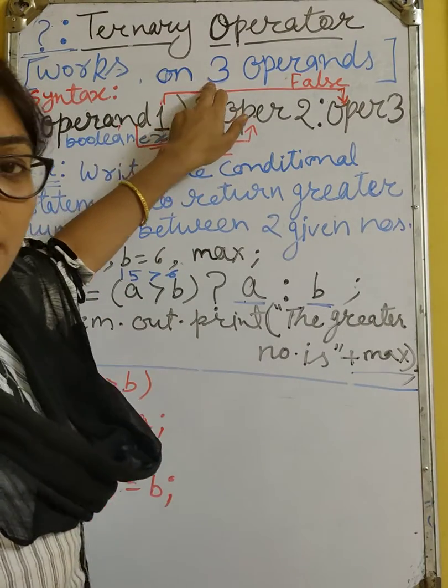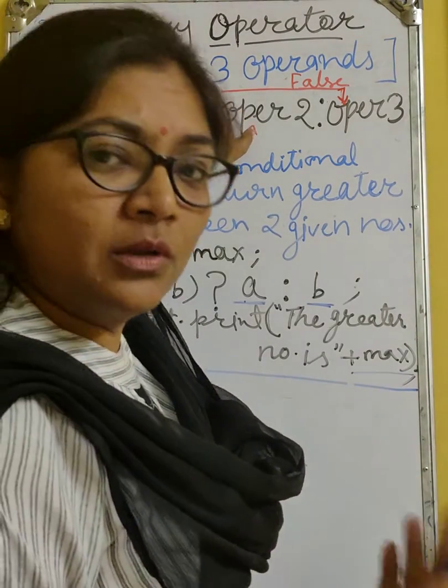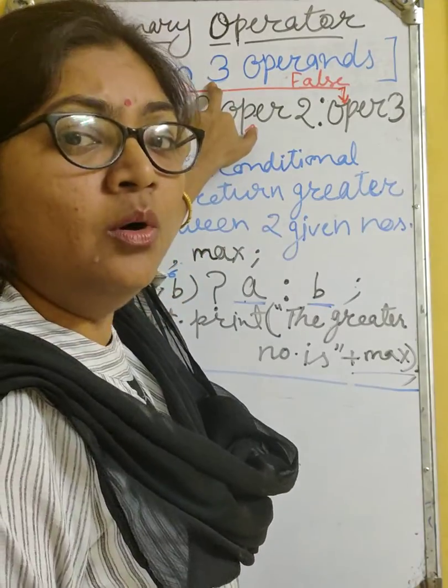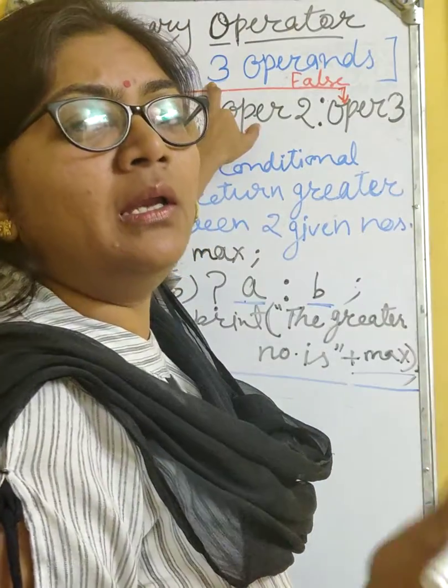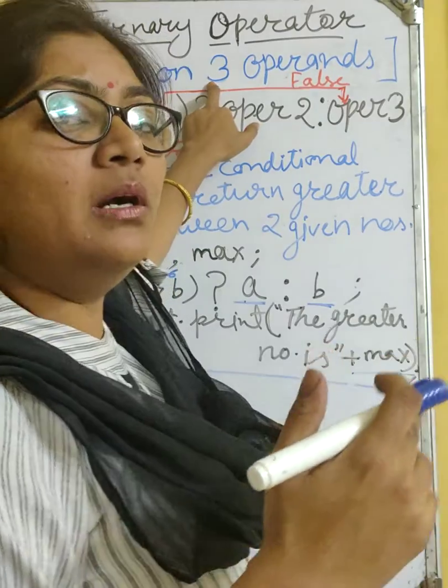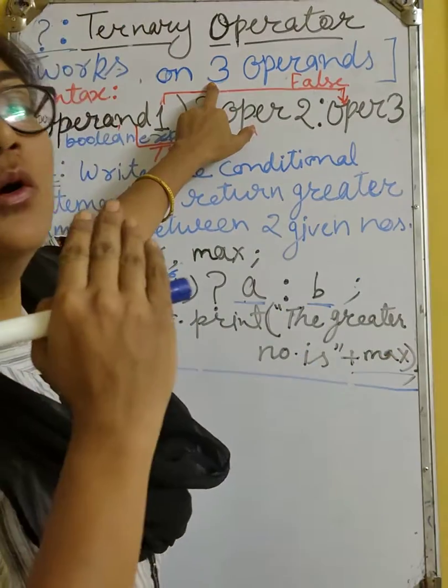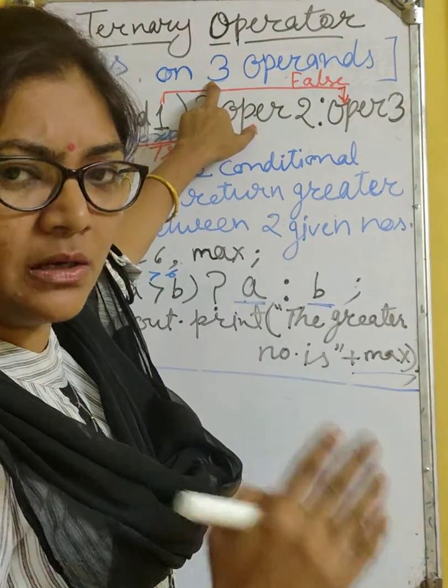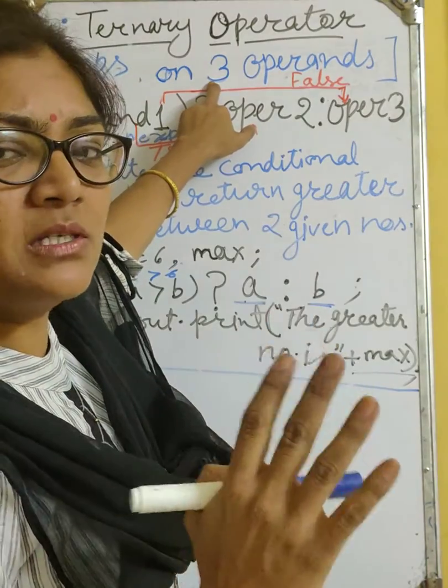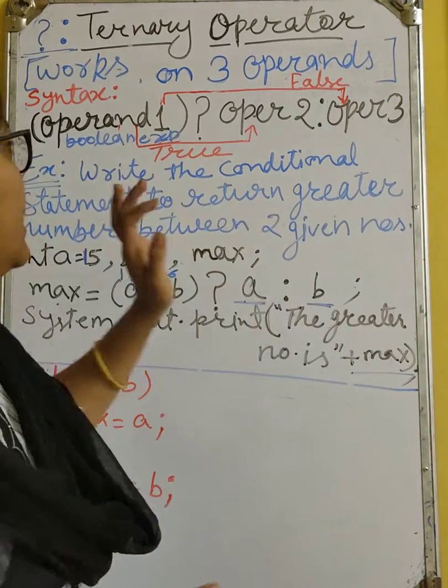Here you cannot write ternary operator works on more than 2 operands. But in ternary operator, only 3 operands are required. Minimum and maximum 3 operands. So it works on 3 operands.